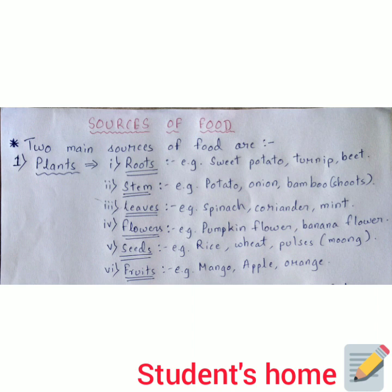Our next point, number two, is stem. The main examples given here are potato, onion, and bamboo — mainly the shoot portion. Potato is a modified stem called a tuber, and onion is also a modified portion of the stem. Bamboo is the normal stem, and the edible portion is the younger bamboo, not more than one foot in height.